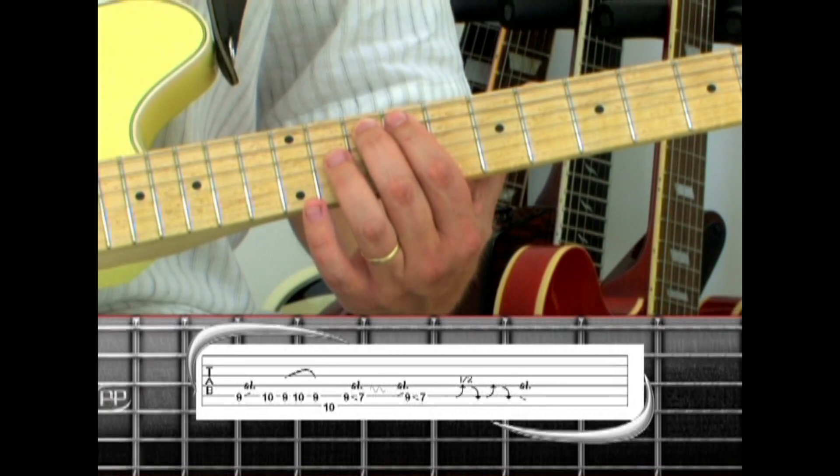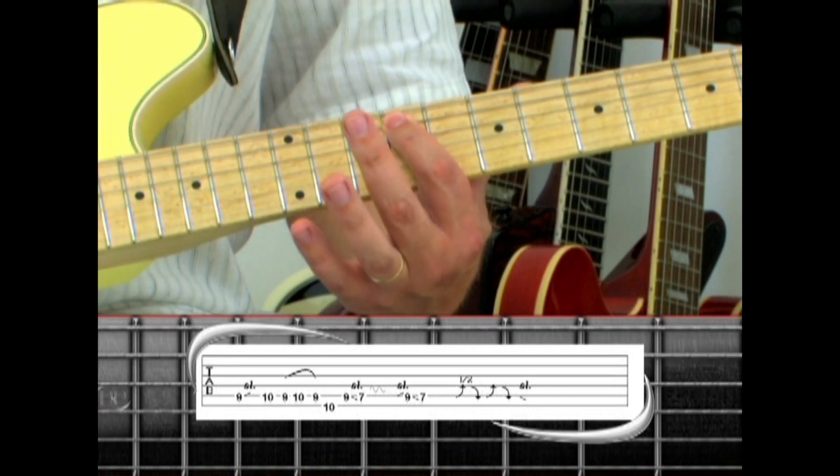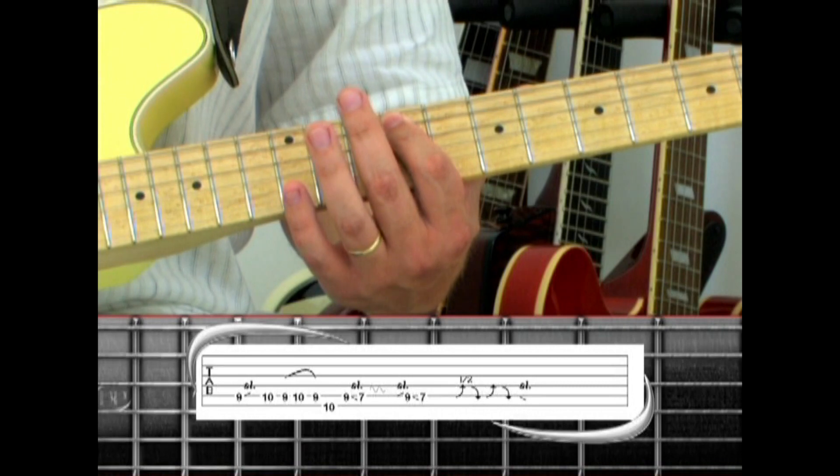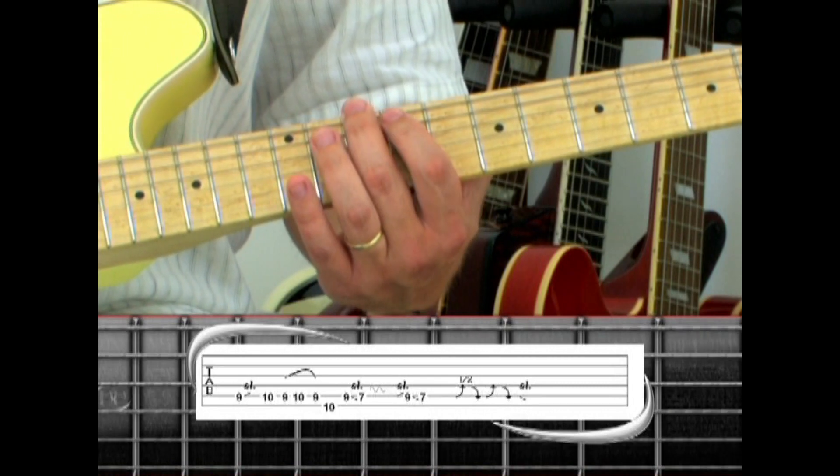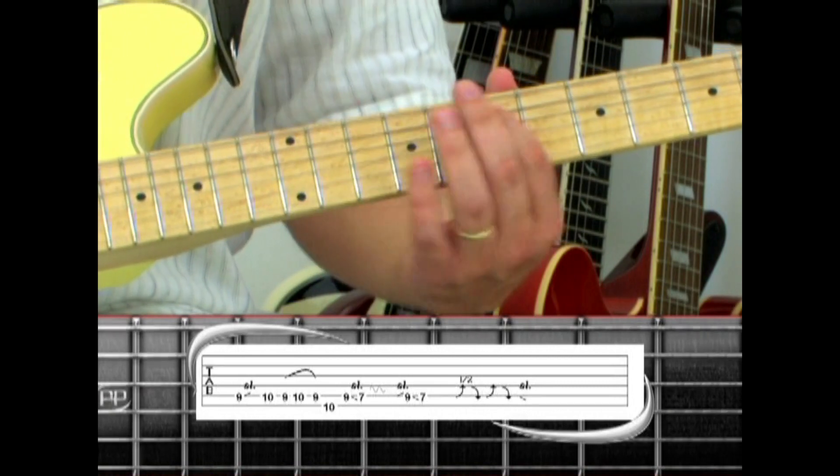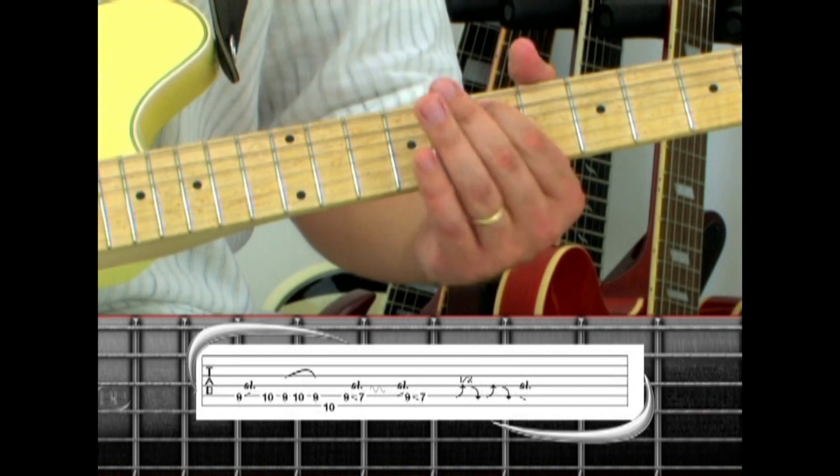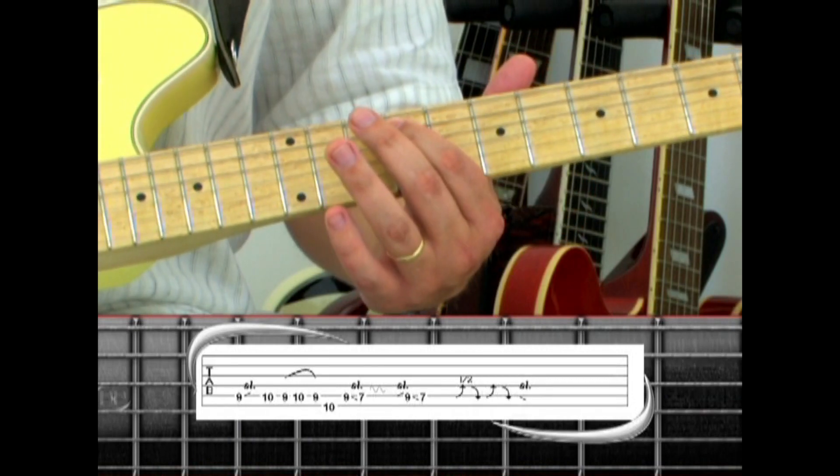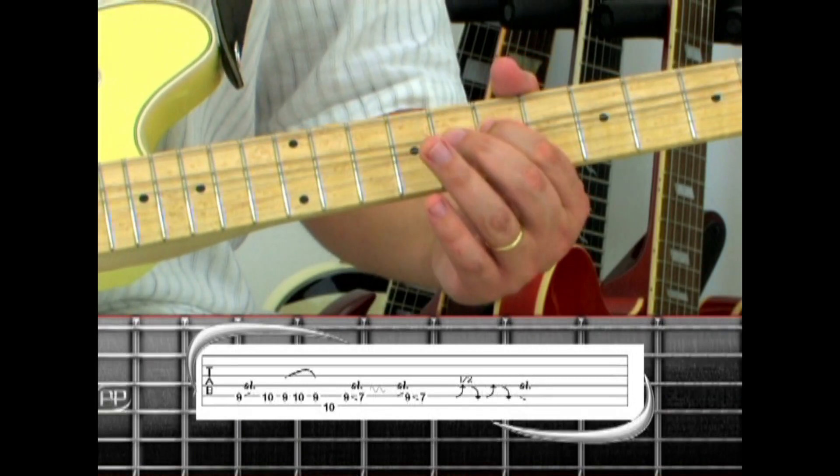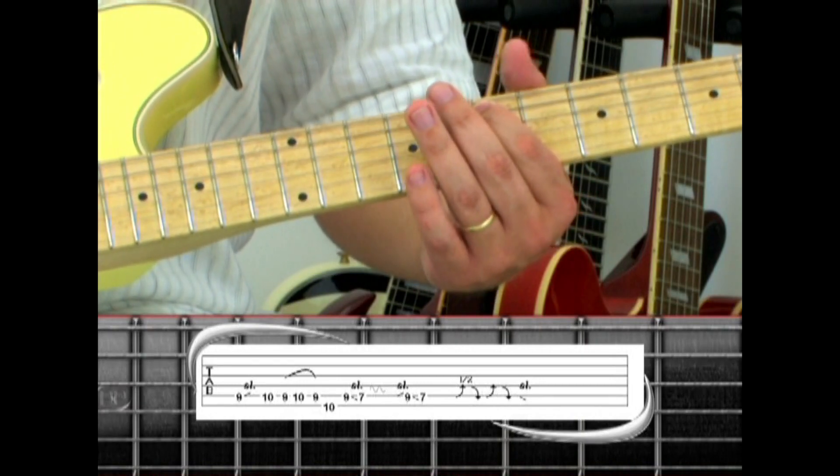With the index finger, play a hammer pull 9, 10, 9 to 6th string 10. Back to 5th string 9, slide to 7 with vibrato. Slide up to 9, back down to 7. Bend, release, bend, release, and slide down.